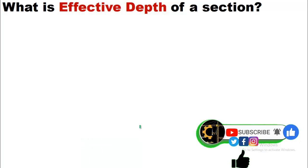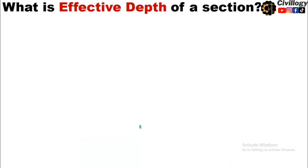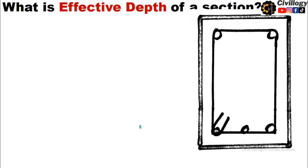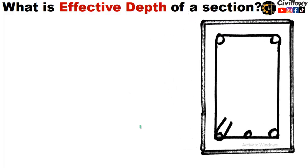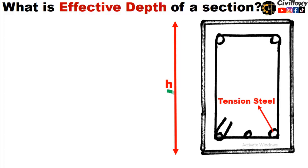First of all, let us define what is effective depth of a section. Let's assume we have a beam — this is the typical cross section of the beam having total depth h. The total depth is represented by h, and the tension steel is provided at the bottom while compression steel is provided at the top.